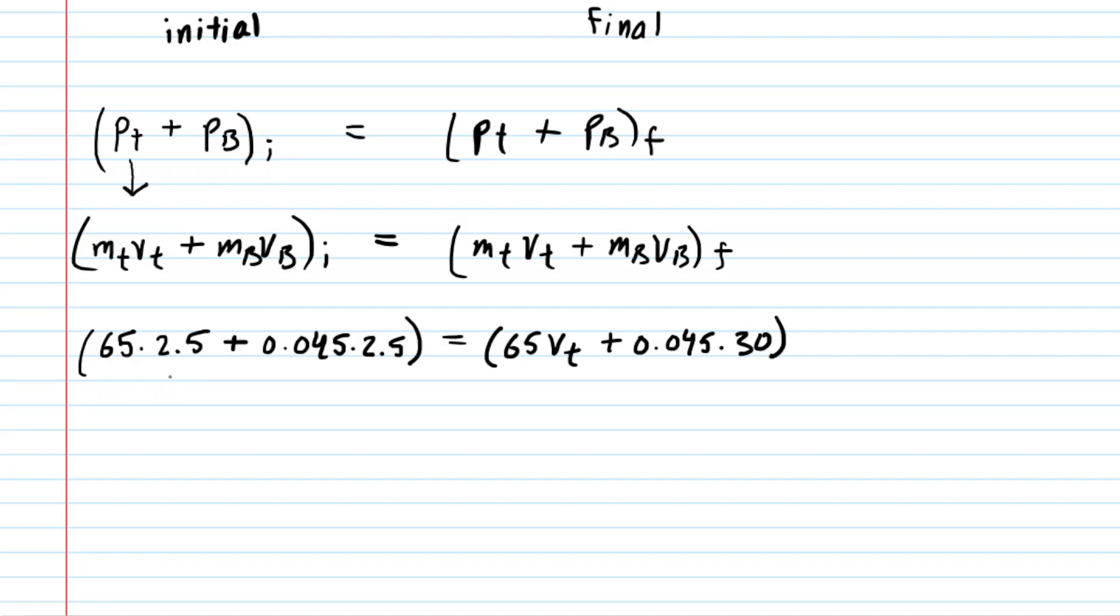Now we can simplify the left hand side. When we do that we get 162.6125. On the other side we have 65 times v sub t.